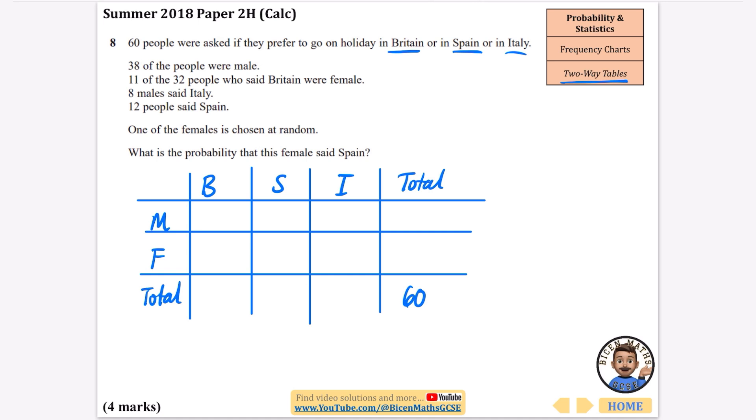So 60 people are asked which is why I'll put a 60 down here and it says 38 of the people were male. Now you can use a calculator for this but it's going to therefore mean that 22 of them are female.